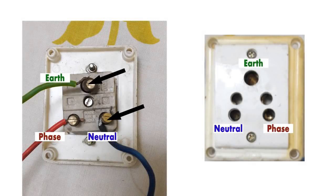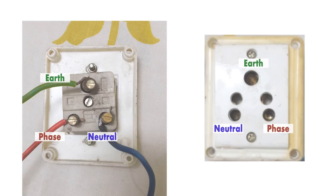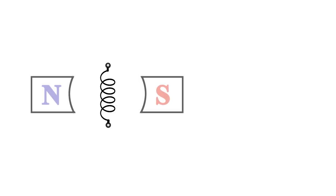The difference between a neutral wire and earth wire can be understood in this way. We know that to generate electrical energy, a coil is made to rotate in a magnetic field.